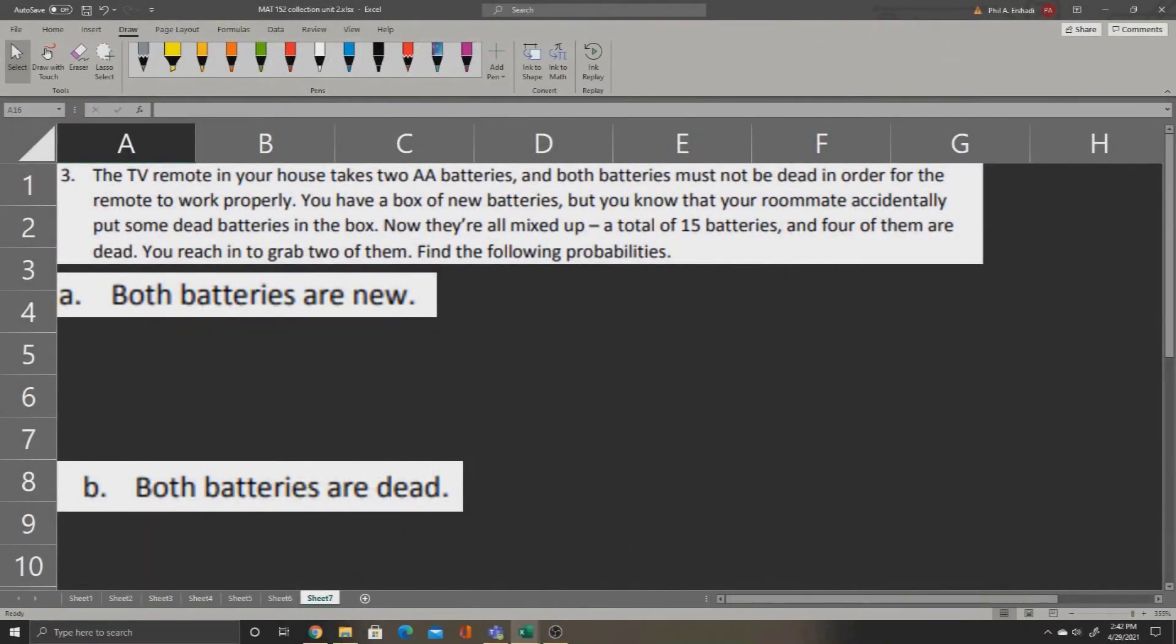This problem says that the TV remote in your house takes two AA batteries, and both batteries must not be dead in order for the remote to work properly. You have a box of new batteries, but you know your roommate accidentally put some dead batteries in the box. Now they're mixed up. We have a total of 15 batteries, and four of them are dead.